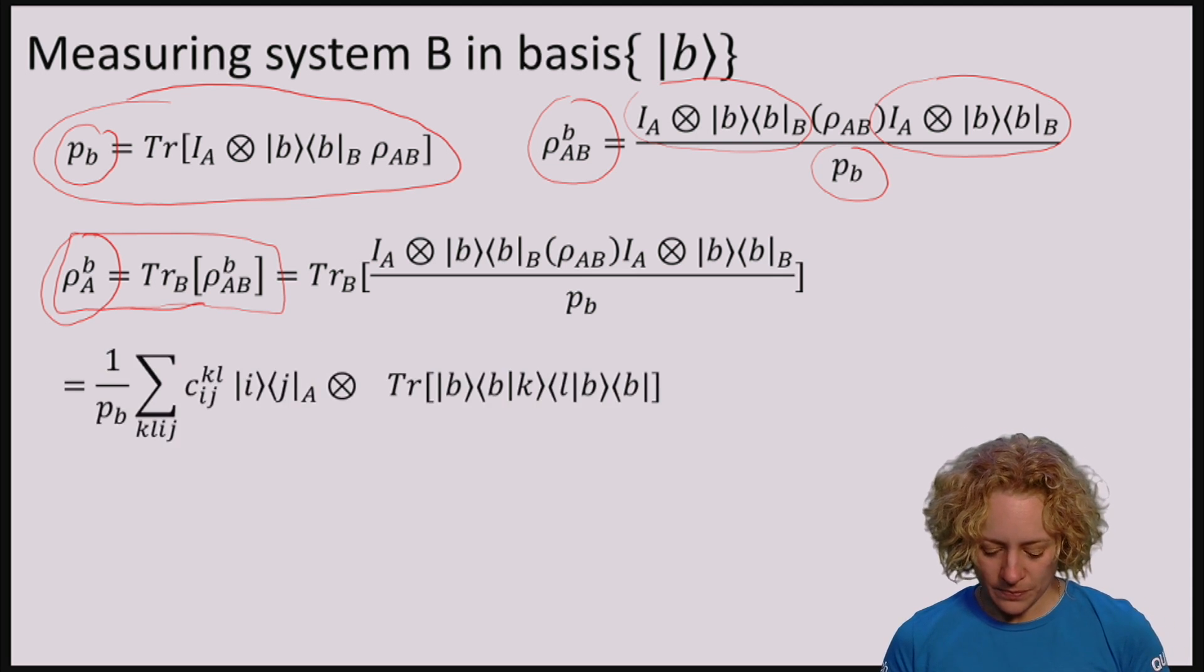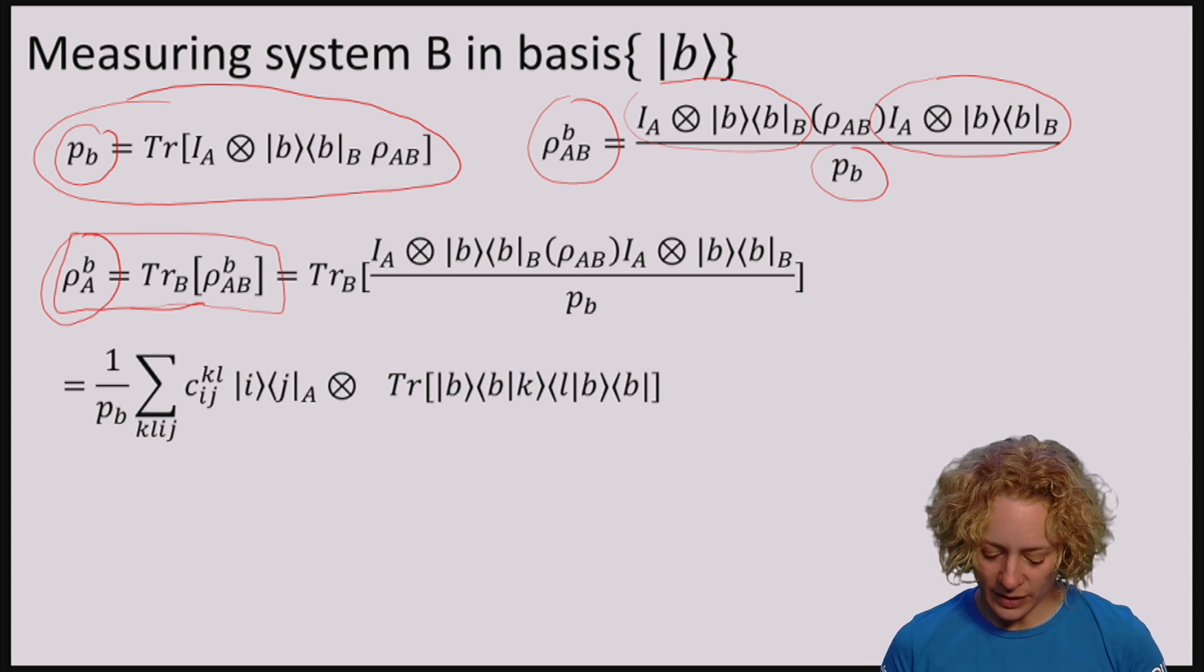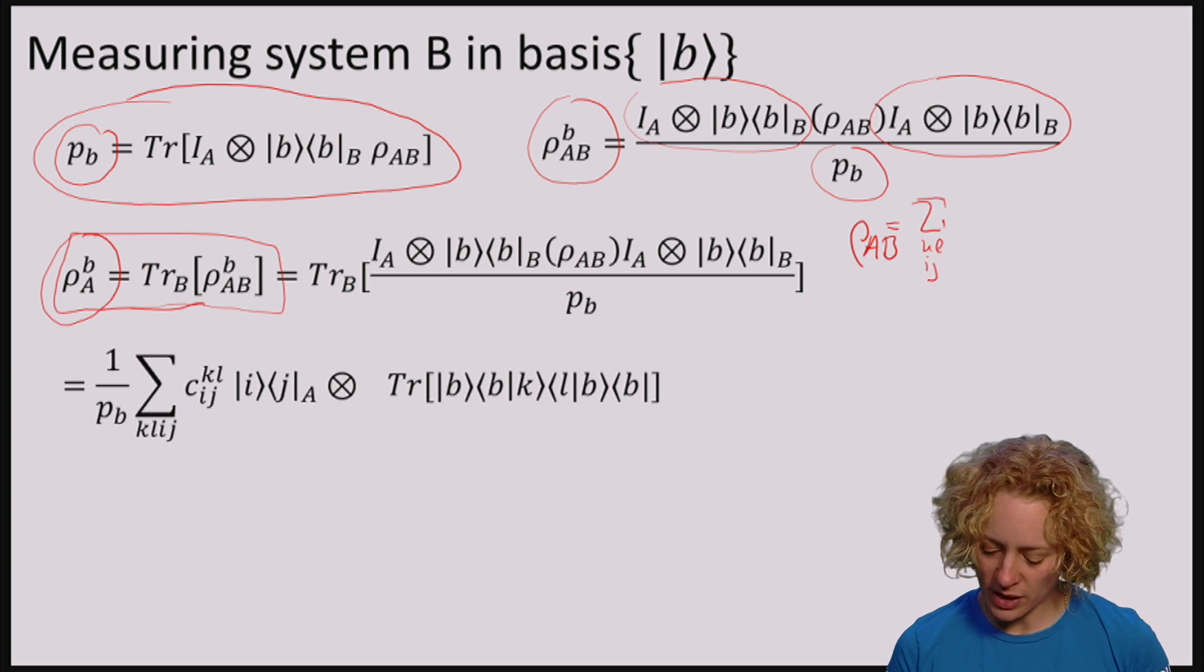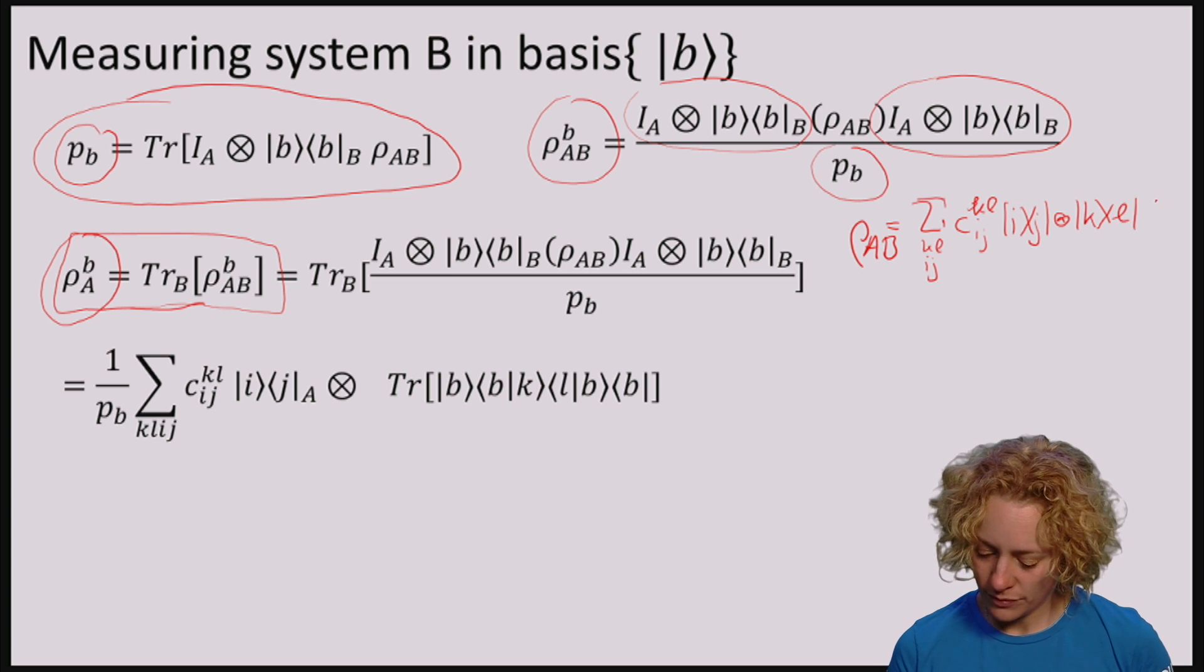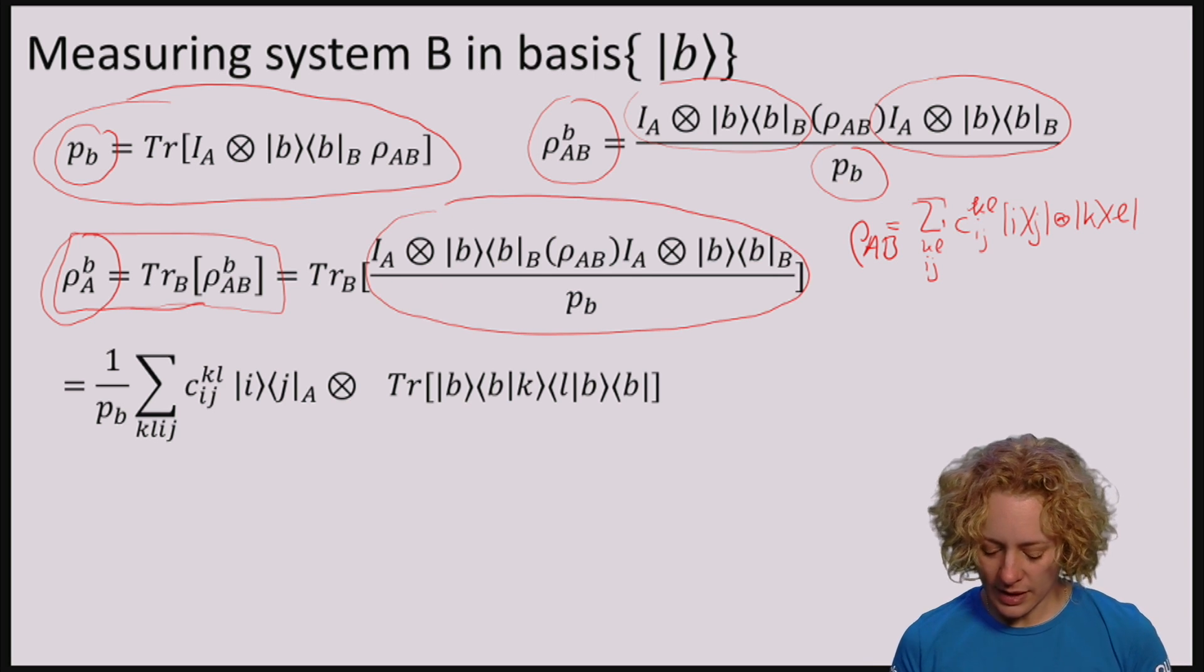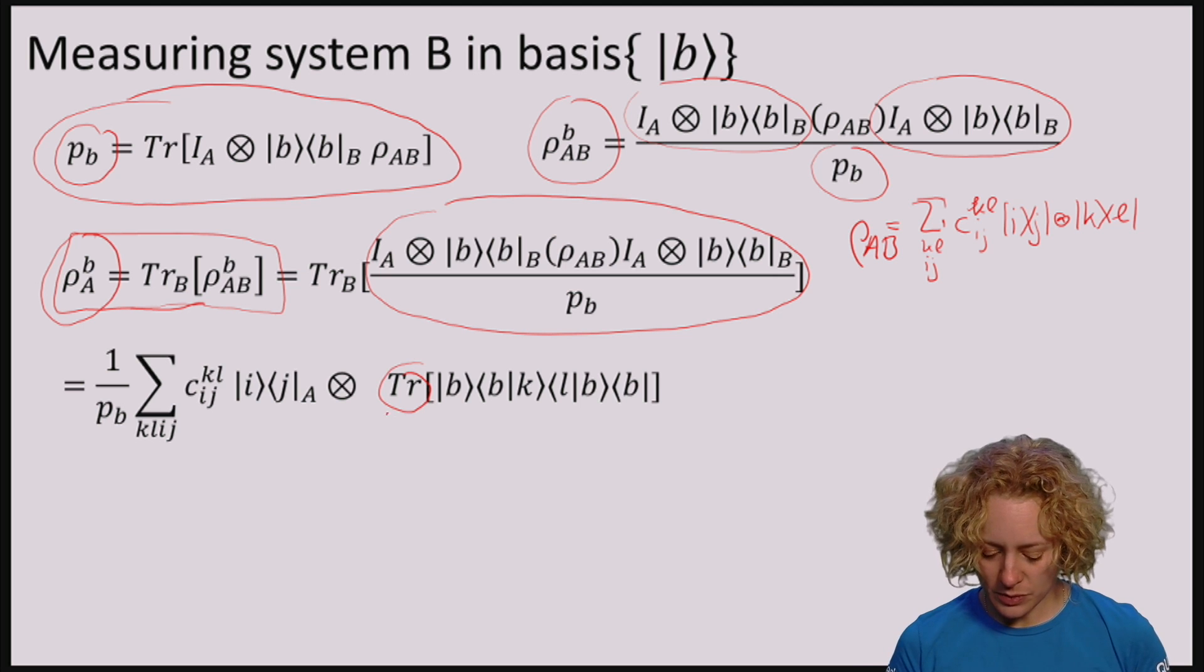So we can just apply our rule. And here I've again just expanded ρ_AB as in my previous video. So ρ_AB is given by K, L, I, J for some coefficients. If I apply the rule here that the partial trace of the post-measurement state is found by just tacking on the trace operation on the B part, we will end up with this expression.